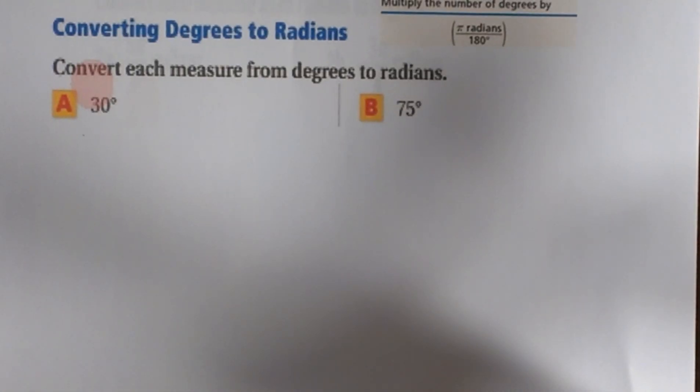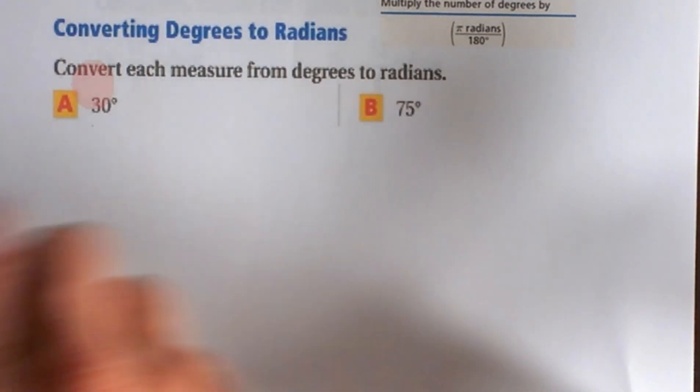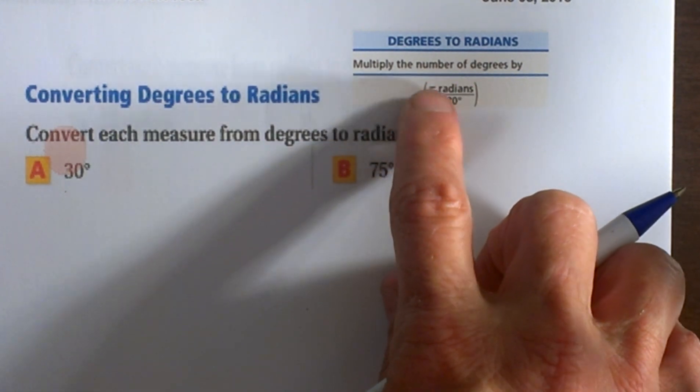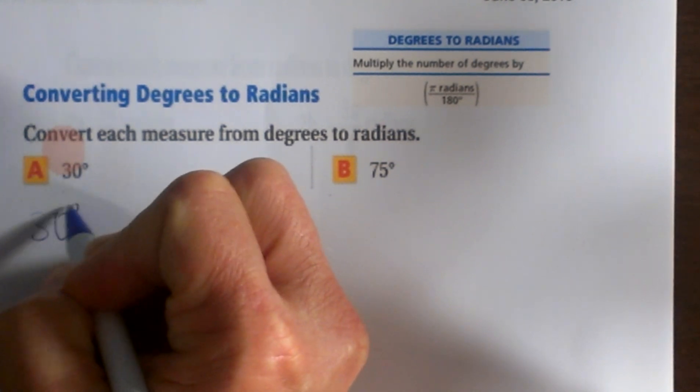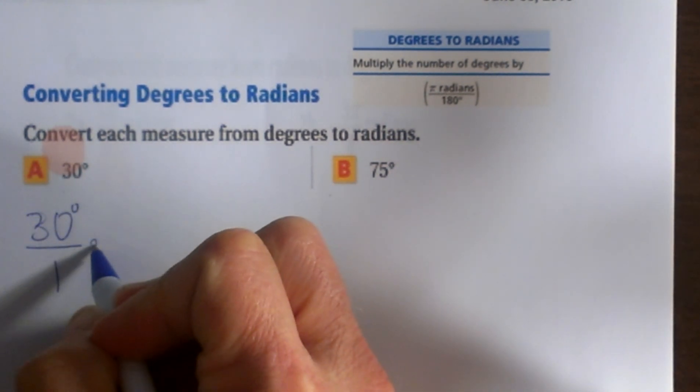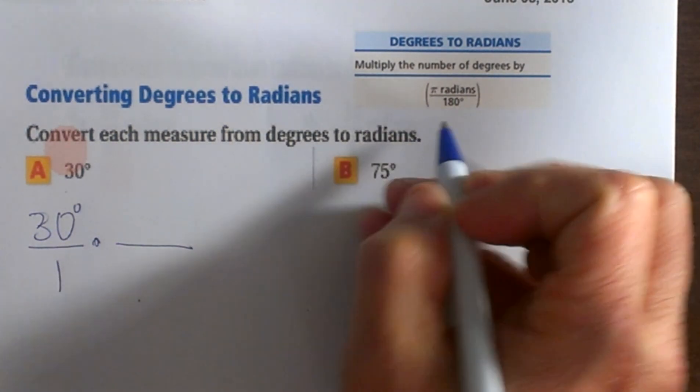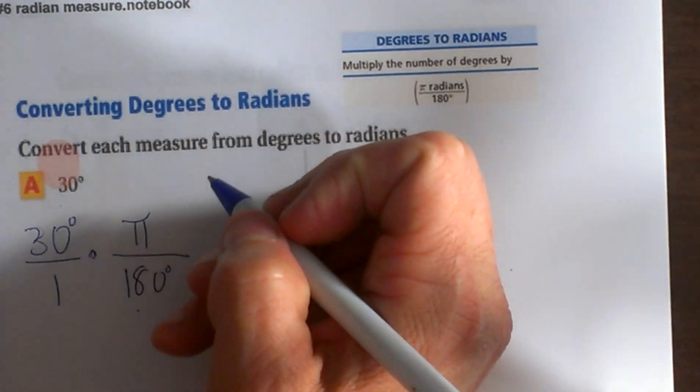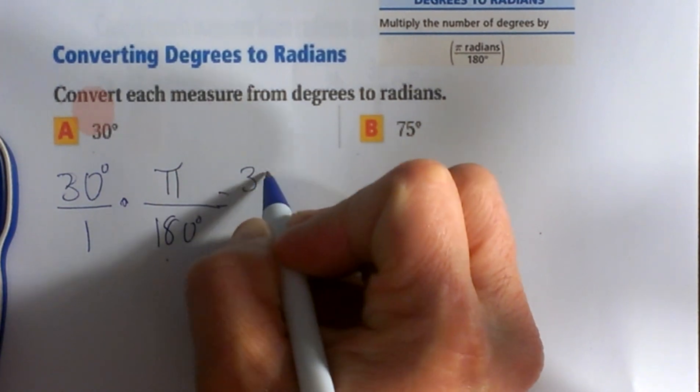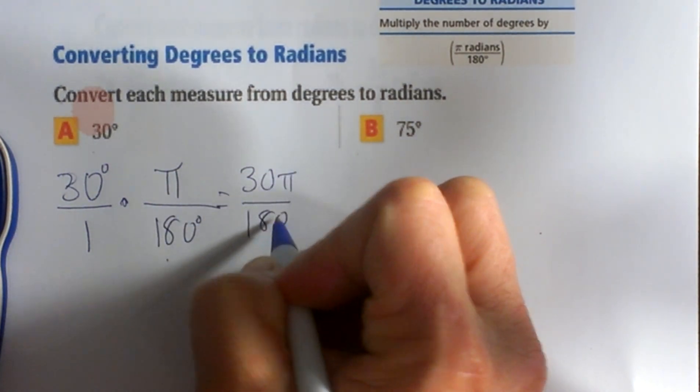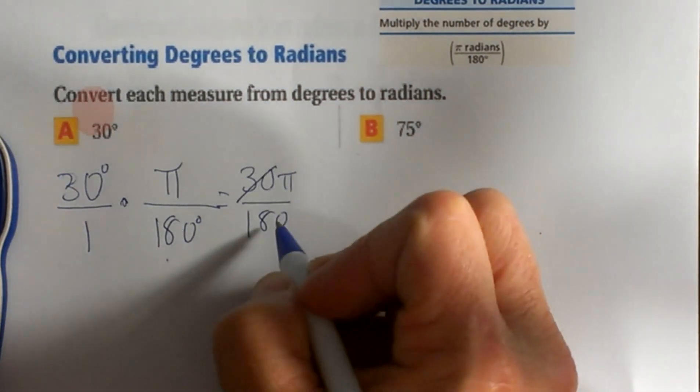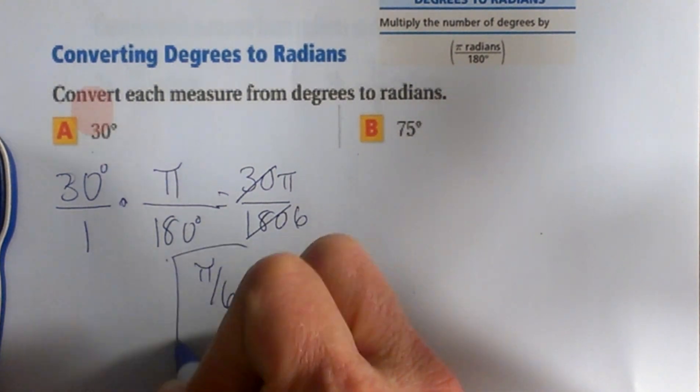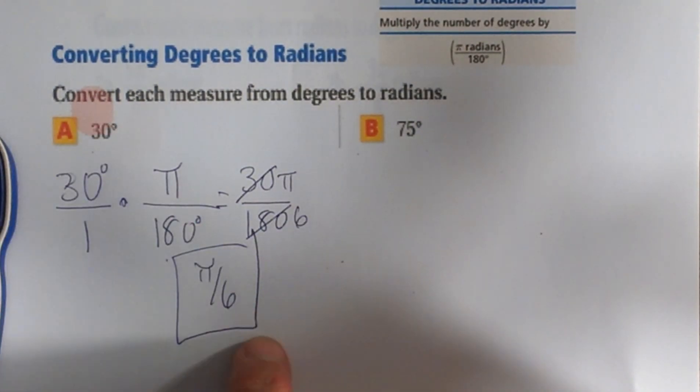Let's convert from degrees to radians. Remember our factor: multiply by π radians over 180. Whatever unit you want to cancel out goes on the bottom. So 30 degrees times π over 180 degrees gives us 30π over 180, which reduces by 30. That's π over 6, so a 30 degree angle is π/6 in radians.